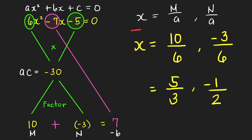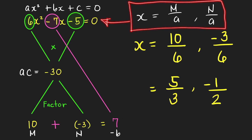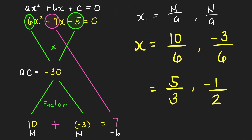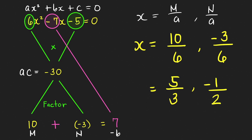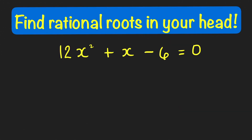To understand why these two numbers are solutions of this equation, you may watch my other video which talks about factoring a trinomial of the form ax squared plus bx plus c. The link to this video is given in the information section in the upper right corner. Let's give one more example — finding the roots of 12x squared plus x minus 6 equal to 0.